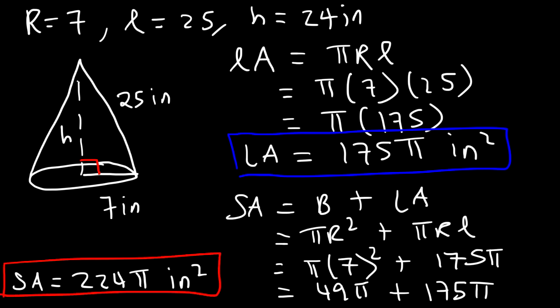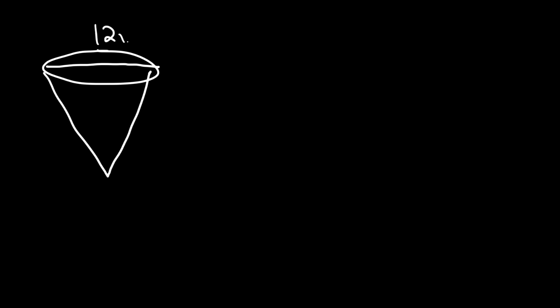That's it for that example. Let's try one more. This time we're given the diameter instead of the radius. The diameter is 12 feet and the slant height is 10 feet. Go ahead and find the volume, lateral area, and surface area.